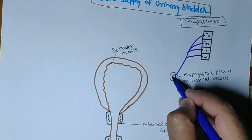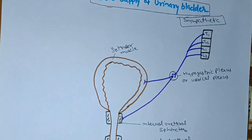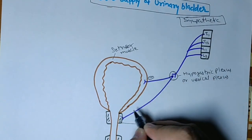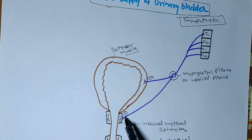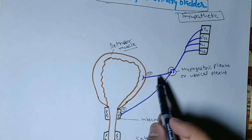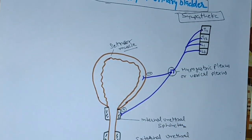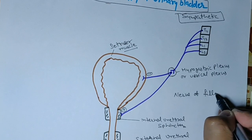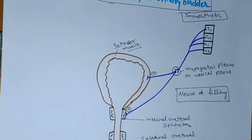These pre-ganglionic fibers will relay at this point and give two fibers: one will go to the detrusor muscle and the other will go to the internal urethral sphincter. The upper fibers are inhibitory for the detrusor muscle, and the lower fibers are excitatory, or motor, for the internal urethral sphincter. If the detrusor muscle relaxes, urine will fill into the bladder, so this nerve is known as the nerve of filling, because it relaxes the detrusor muscle.